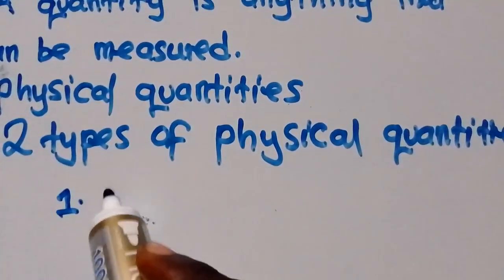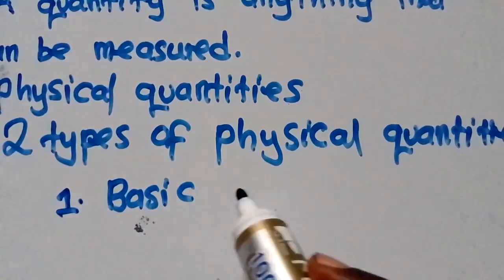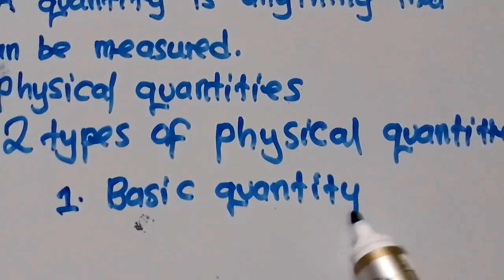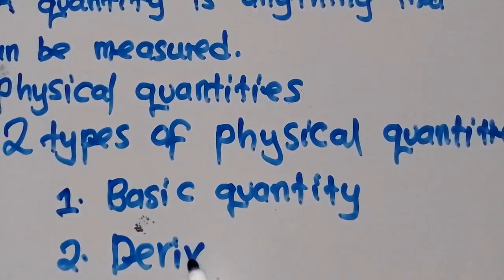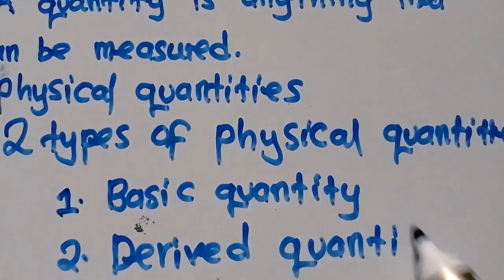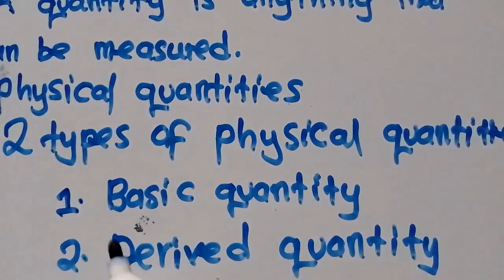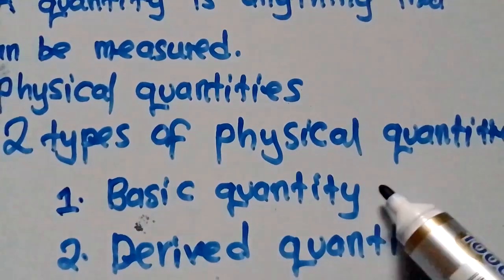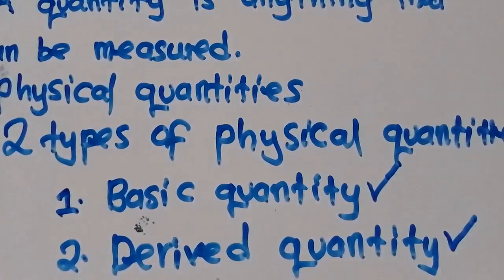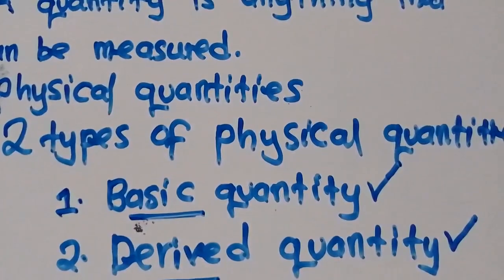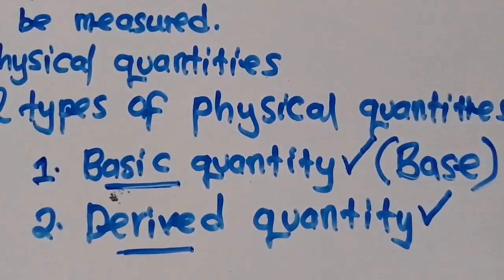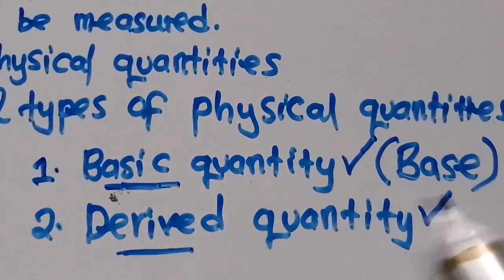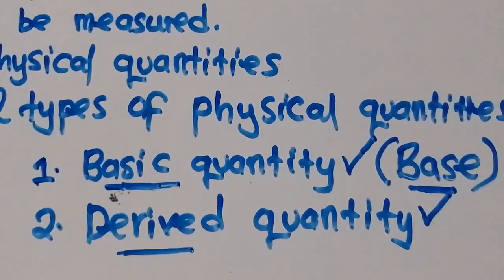The first type is called basic quantities. The second type is called derived quantities. So these are the two types of physical quantities that we have: basic quantities and derived quantities. The other name for a basic quantity is 'base quantity' — some books will refer to it as basic quantity, so it is just one and the same thing.